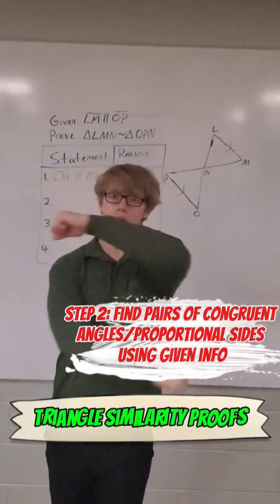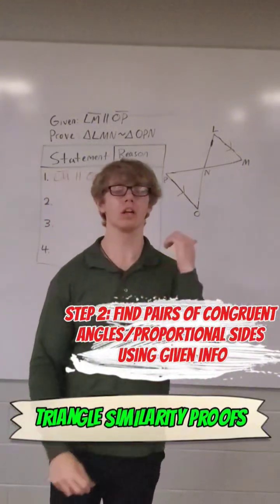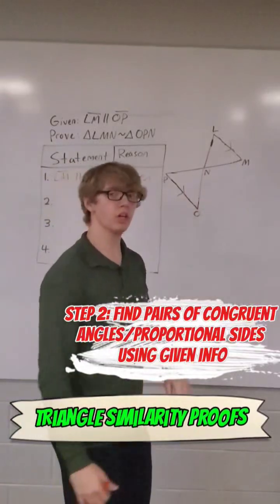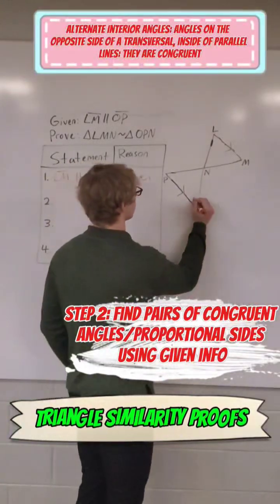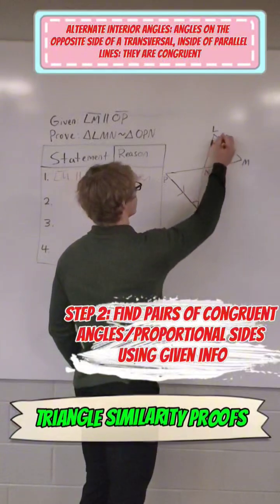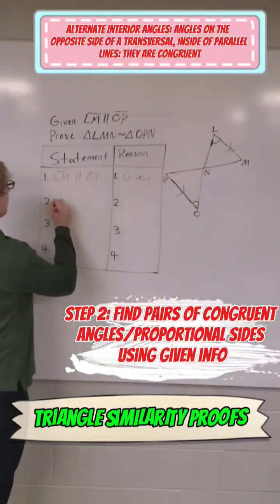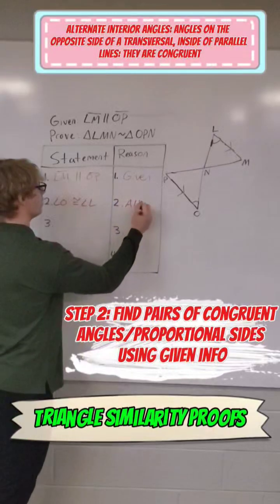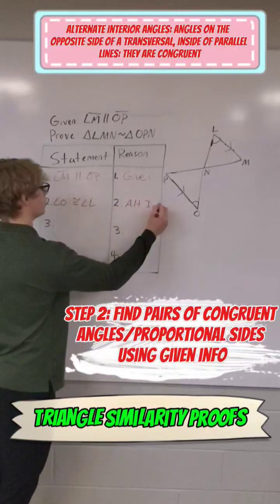Now we have parallel lines. It's going to give us angle pairs that are congruent. So if you look up here, we can say that angle L and angle O are congruent using alternate interior angles. So I'm going to mark those as well. We have angle O is congruent to angle L, and we know that alternate interior angles are congruent.